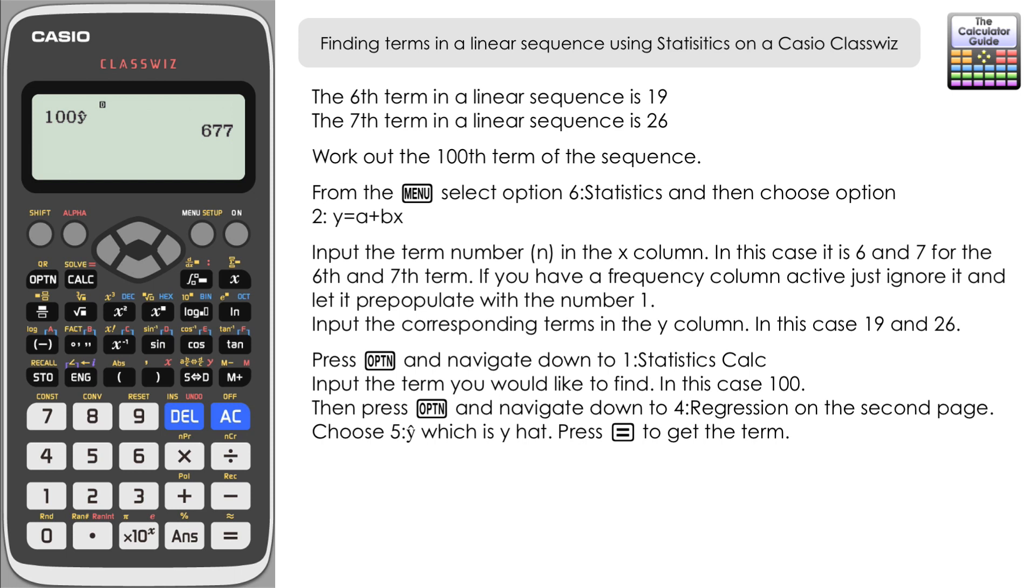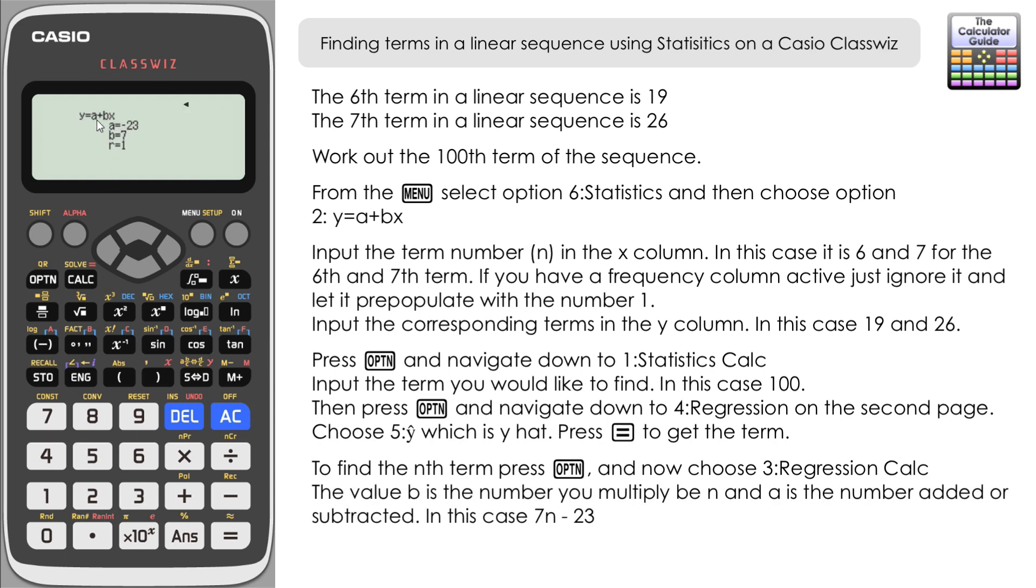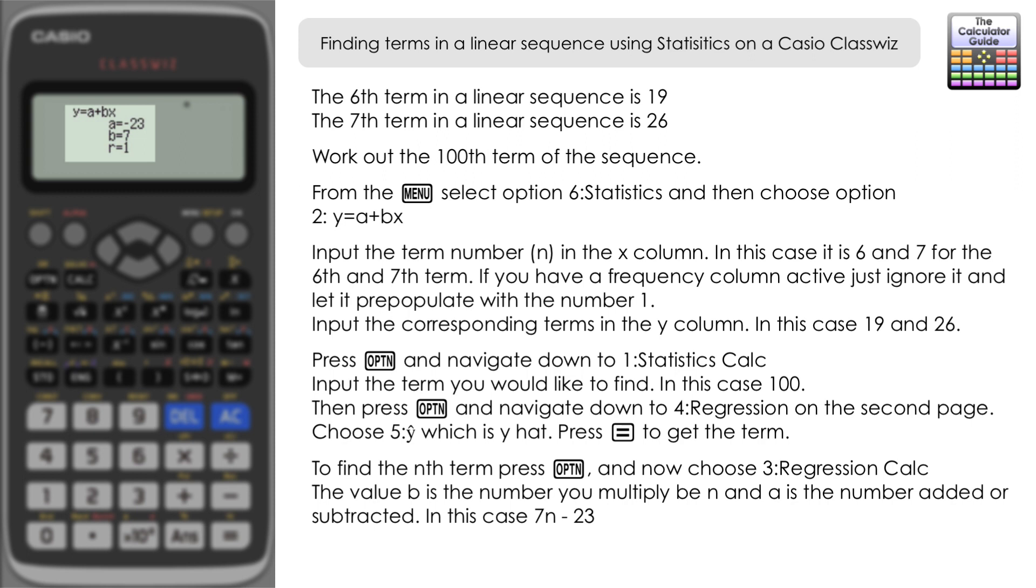Incidentally, if we are looking for the nth term equation for the sequence, what we can do is press option again and this time press Regression Calc. We've got three bits of information here. If you have a look at how the equation of the line is presented—Y equals A plus BX—X is representing our n, so it's -23 plus 7n. You might want to switch those the other way around: 7n - 23 is the nth term of this particular sequence. The R of 1 there just means that we've got a perfect linear relationship, which we knew anyway because it's told us it was a linear sequence.